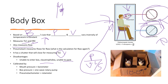To calibrate the body box, you need a barometer to calibrate mouth pressure, a sine wave rotary pump for box pressure, and a rotometer for the pneumotachometer. These three devices together ensure the body box is properly calibrated before use.